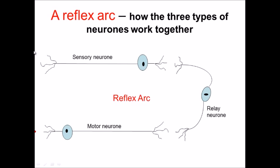If we think about the first thing that would happen if you put your hand on, let's say, a hot plate, the first thing that would happen is that it would be picked up by a receptor. That receptor might be the temperature receptors in your hand.